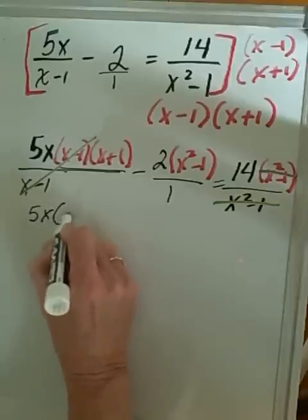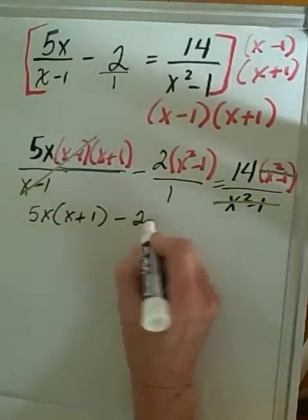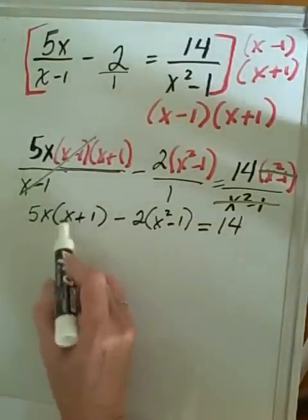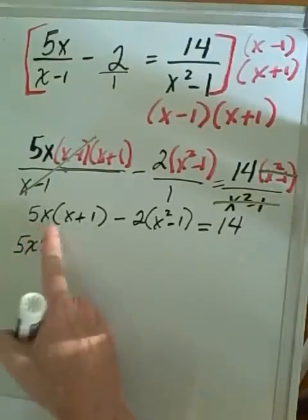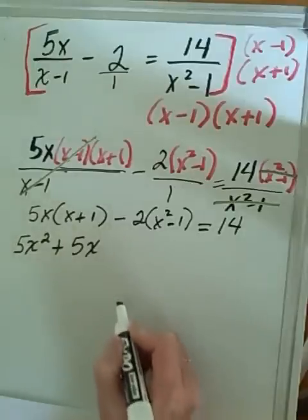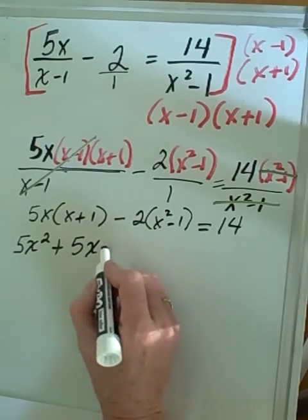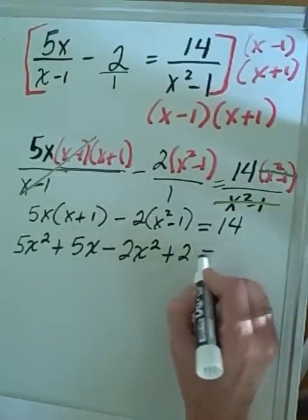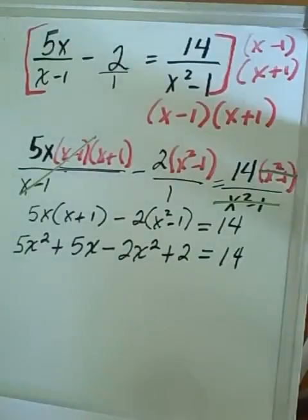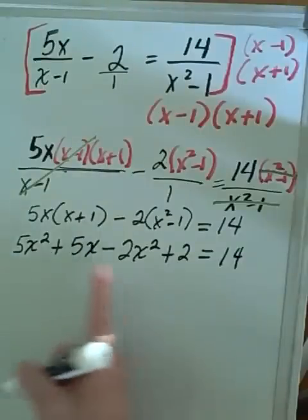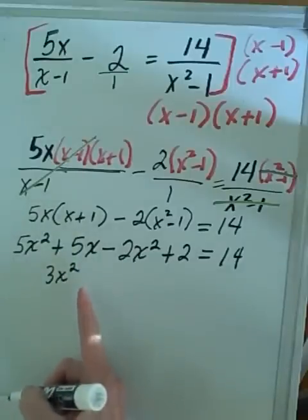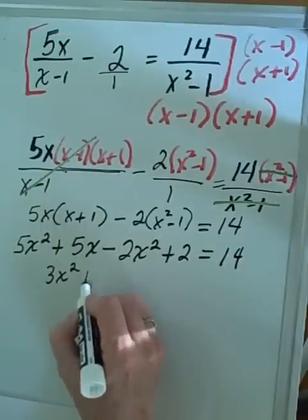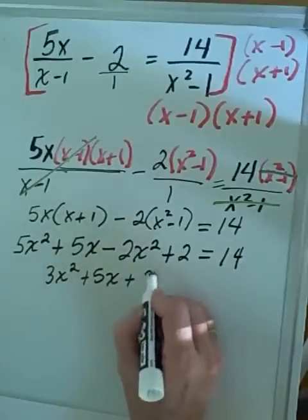This leaves us with 5x times x plus 1, minus 2 times x squared minus 1, equals 14. Using the distributive property: 5x times x gives 5x squared, 5x times 1 gives 5x. Then negative 2 times x squared gives negative 2x squared, and negative 2 times negative 1 gives positive 2. Combining like terms: 5x squared minus 2x squared gives 3x squared, plus 5x, plus 2, equals 14.